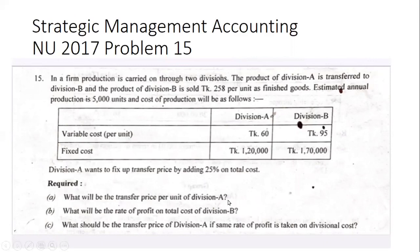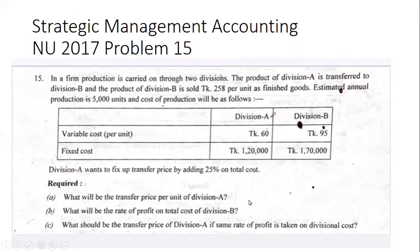Per unit of Division A — what will be the rate of profit on total cost of Division B? And what will be the transfer price of Division A if the same rate of profit is taken on divisional cost?